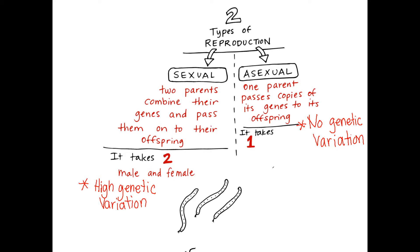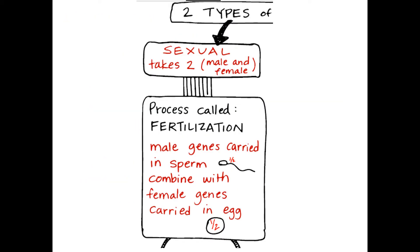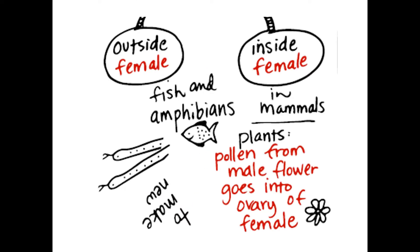With sexual reproduction, here's a picture of sperm and egg. You have half of the DNA from the mom and half of the DNA from the dad, and you're going to have high genetic variation — in other words, the kids are going to look different because each kid gets different DNA from the parents. This process where sperm plus egg combine — half plus half — is called fertilization.